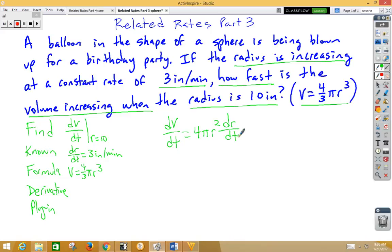Now it's time to plug in. The value that they gave us for r was 10. So dV/dt is equal to 4 times π times 10² times our dr/dt, which is 3. We have 4 times 3 is 12, and 10² is 100, so that gives us 1200π.